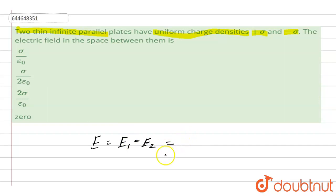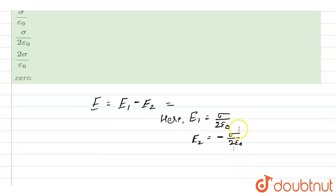So what is E1 over here? Let's find there. E1 will be equal to sigma upon 2 epsilon naught and the value of E2 will be